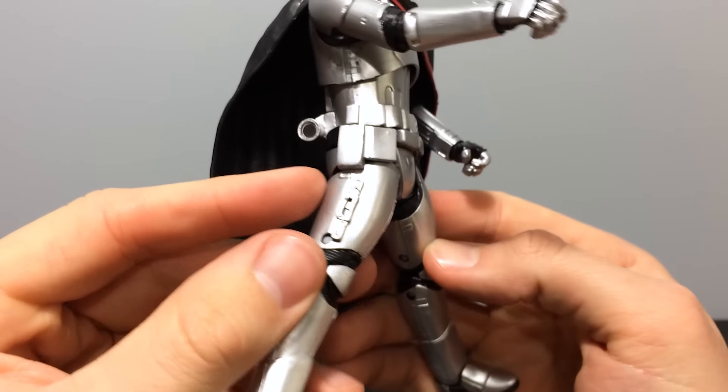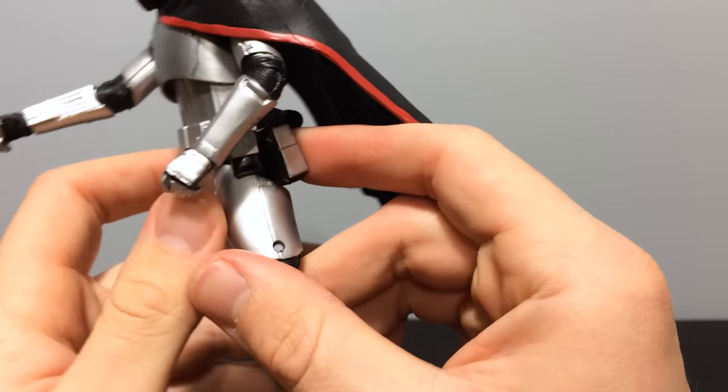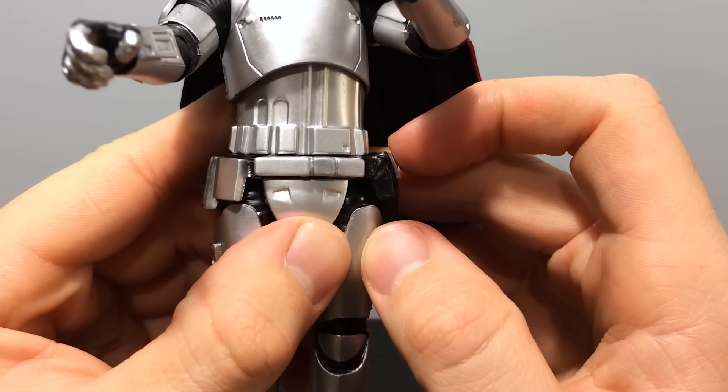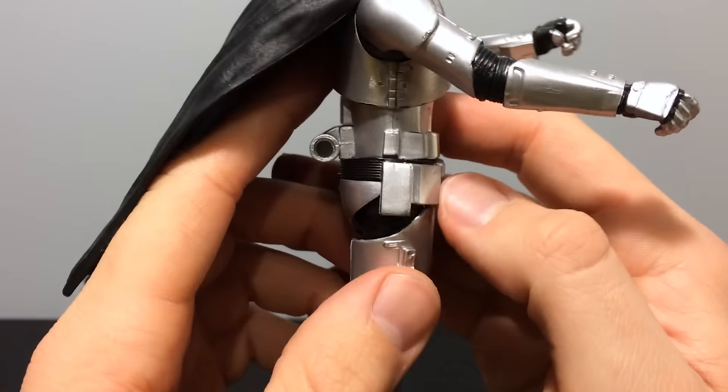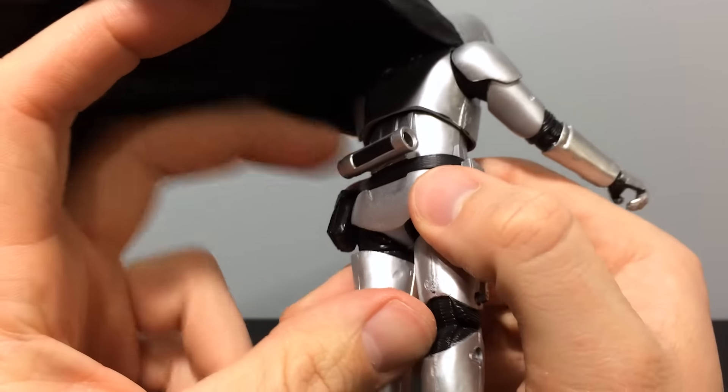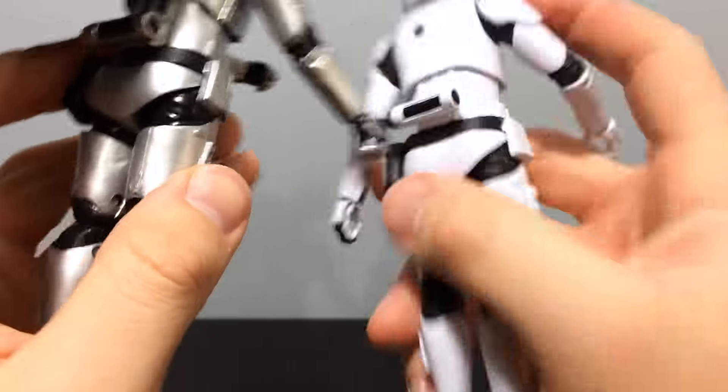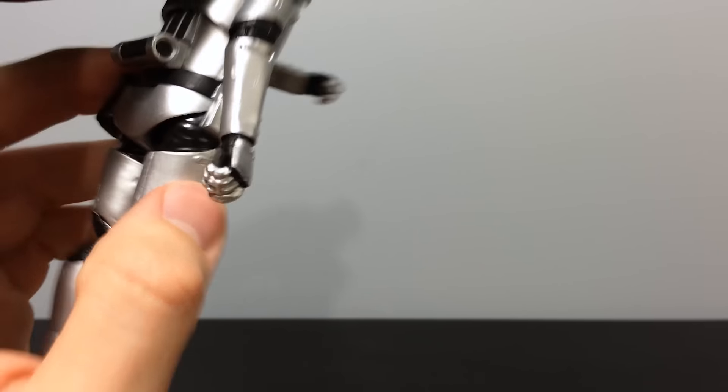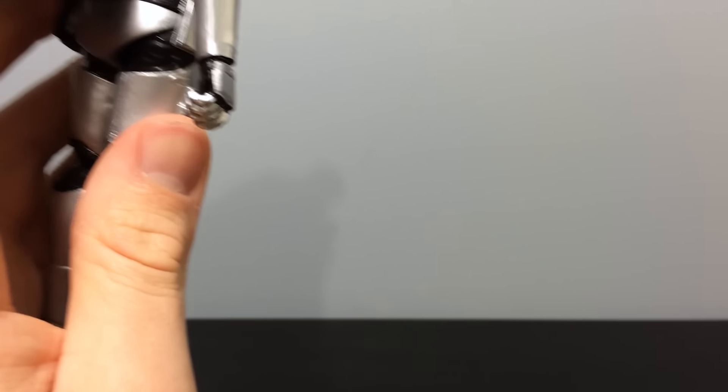She cannot do the splits because of her belt accessories. She has here on the right, her left, and the right, her right, because I rotate it.